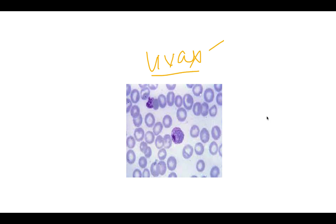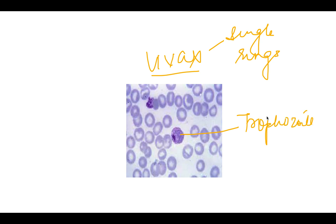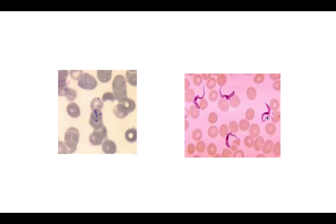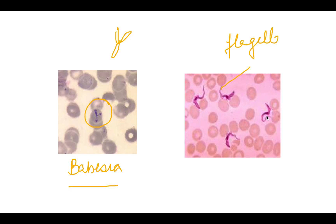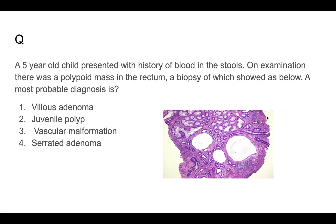In Plasmodium vivax, single rings are present along with trophozoites, which are very characteristic. Babesia shows a Maltese cross appearance — a cross-like structure inside the RBC. Trypanosoma is identified by its flagella on the blood slide. So the hemoparasites visible on PBS include Plasmodium vivax, falciparum, Babesia, and Trypanosoma.